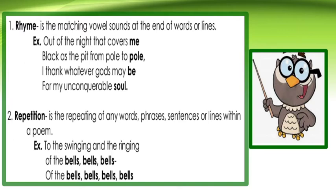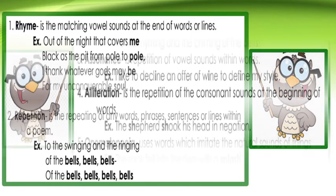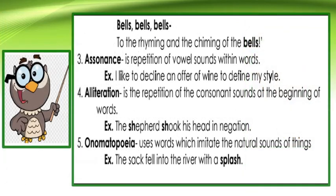Next, we have repetition. This is the repeating of any words, phrases, sentences, or lines within a poem. Example: 'To the swinging and the ringing of the bells, bells, bells — of the bells, bells, bells, bells, bells, bells — to the ringing and the chiming of the bells.'